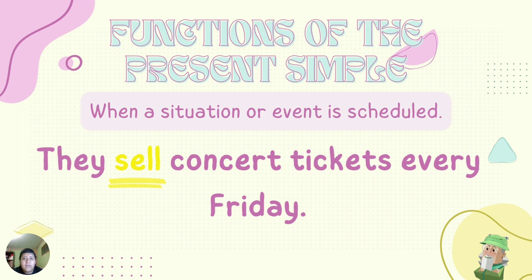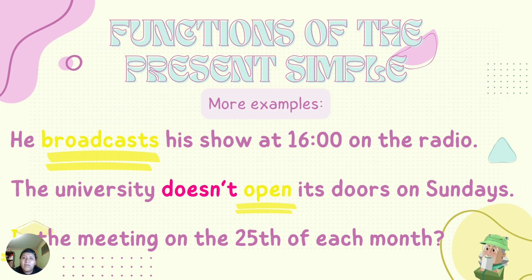When a situation or event is scheduled. They sell concert tickets every Friday — 'sell' is the verb in present simple. Here we have more examples: He broadcasts his show at 16 o'clock on the radio. The university doesn't open its doors on Sundays — 'open' is the verb in present simple and 'doesn't' is the auxiliary verb, in negative form. Is the meeting only on the 25th of each month? 'Is' is the verb in present simple — this is an interrogative form.